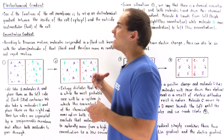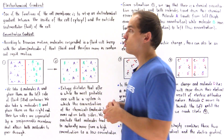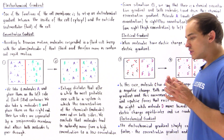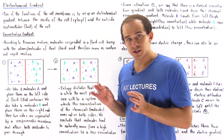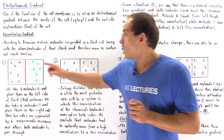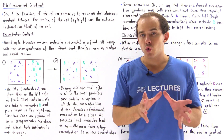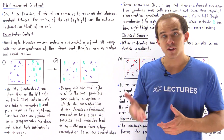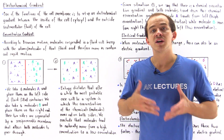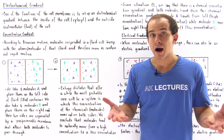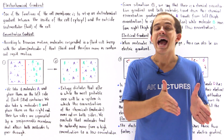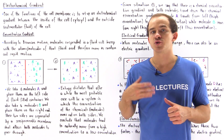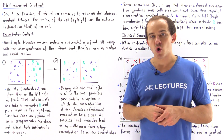Let's begin with a concentration gradient, or a chemical concentration gradient. Let's recall a concept from physics. According to Brownian motion, if we take a molecule and place it inside a fluid, the molecule will collide with the atoms or molecules of that fluid. As a result, that molecule in the fluid will experience random and rapid motion.